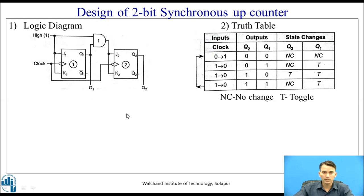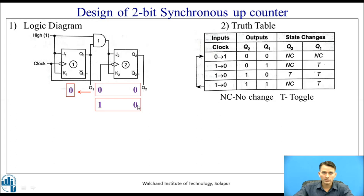Let us see the operation of this 2-bit synchronous up counter. Initially the state is 0,0 so Q1 is 0 and Q2 is 0. Q1 output 0 is connected to the AND gate so it gives 0. When J2 is 0 and K2 is 0, there will be no change. When the next clock pulse is given, Q2 remains the same but Q1 changes state because its input is high. On the following clock pulse, the previous output of Q1 is 1, so 1 and 1 is given to J2 and K2, putting it in toggle mode.